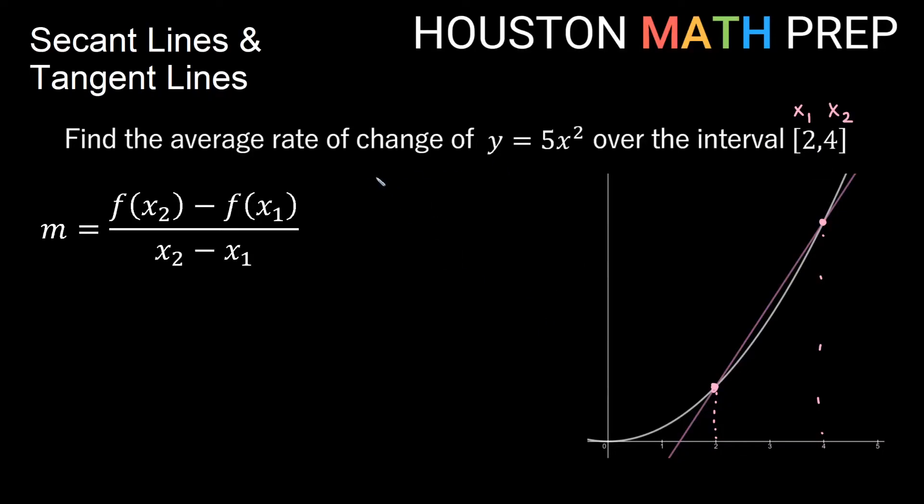Let's go ahead and say that f of 2 is going to be 5 times 2 squared. This will be 4, and 5 times 4 will give us 20. So we have a y value of 20 when x is 2. And let's figure out our f of x2. If I plug in 4, that will give us 5 times 4 squared. 4 squared is 16, and 5 times that will be 80.